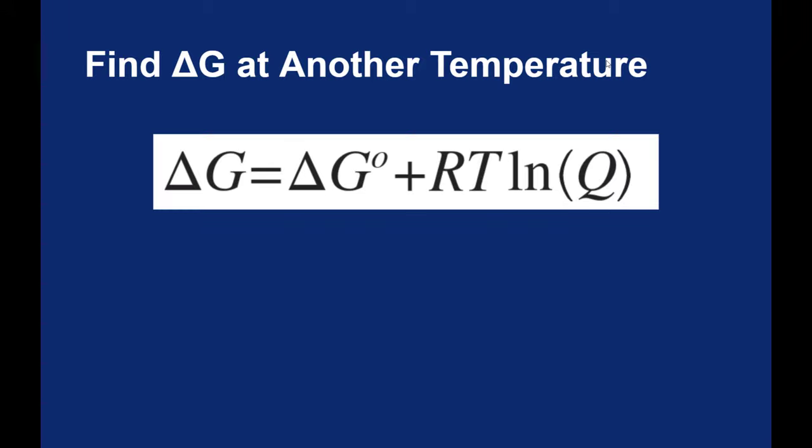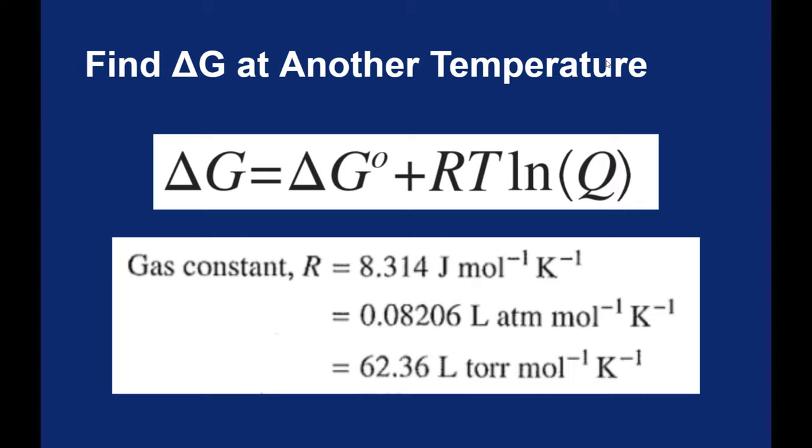R is our universal gas constant or our ideal gas constant. Now there are several values of R that we've used. Because we're talking about energy here, we're going to use the 8.314 joules per mole per Kelvin unit.